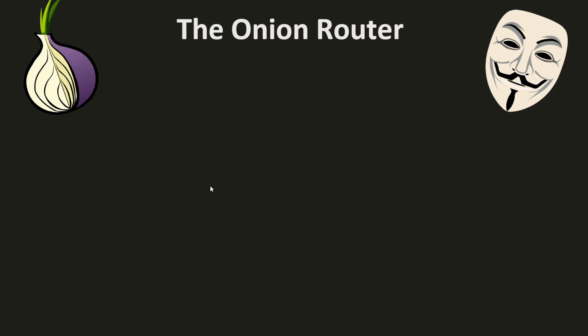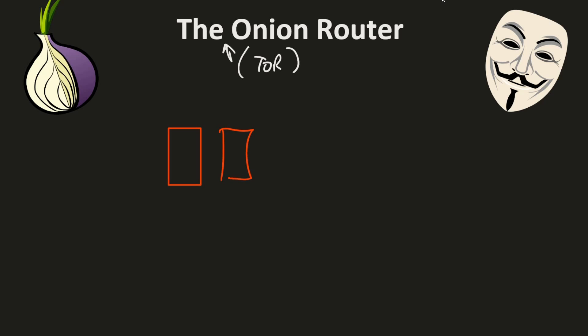Today let's talk about Tor — what it is and how it's used, so you can have a good understanding of its capabilities. Tor is short for the Onion Router, and it really refers to a network of servers that allows you to communicate anonymously over the internet.